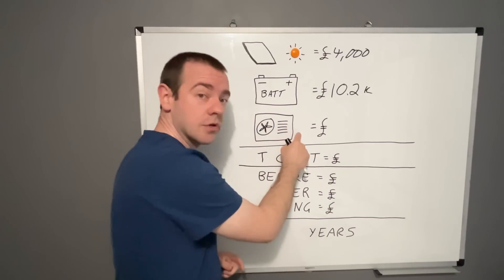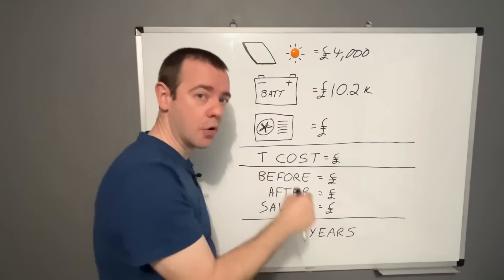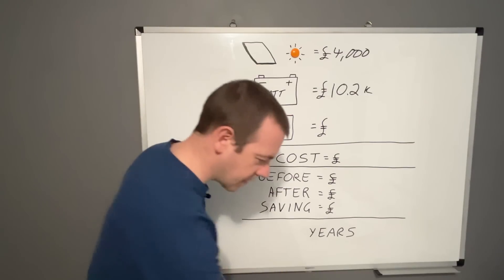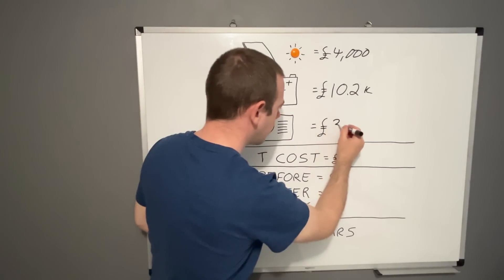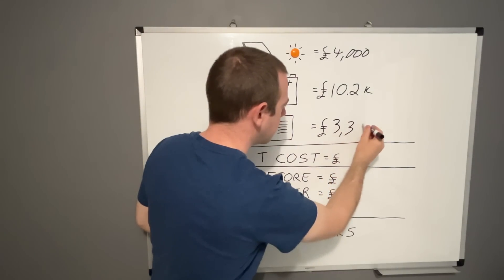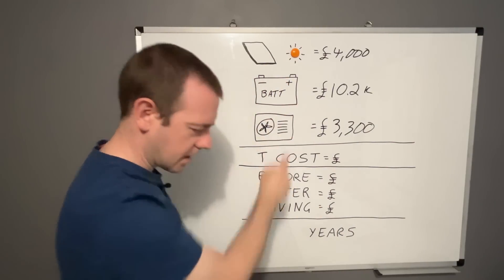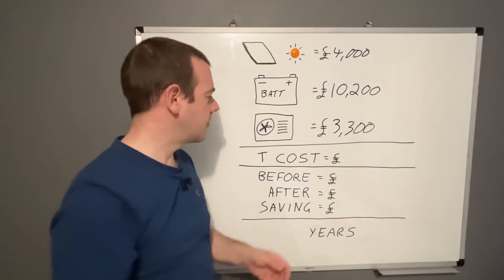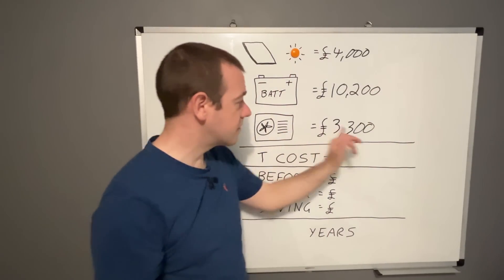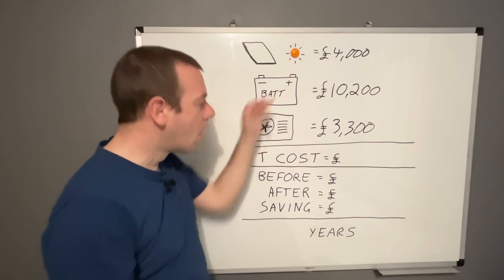So how much extra did the heat pump cost us post grant? So that cost us on top £3,300. Why did I put that as that? My apologies. Do it in the same format. It kind of makes more sense. So that was £3,300 more than the gas boiler would have cost us because you need something.